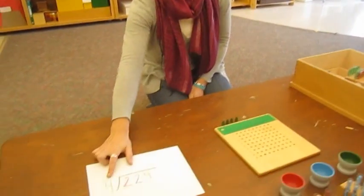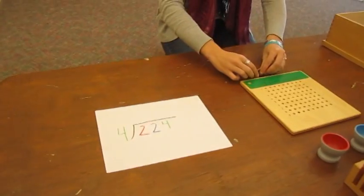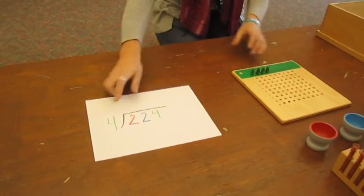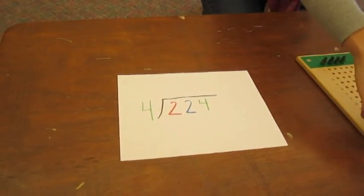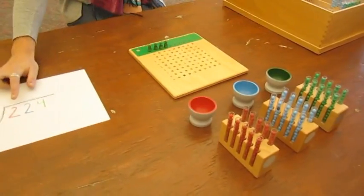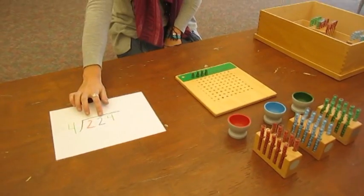So first we're going to start out by placing our four skittles which represents our four. Then we are going to use our test tubes and our cups to show 224.